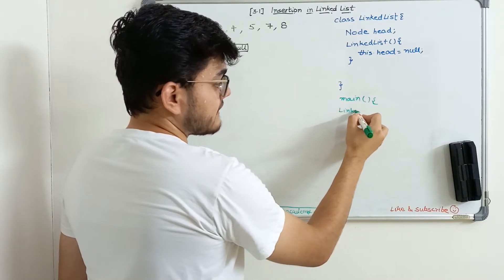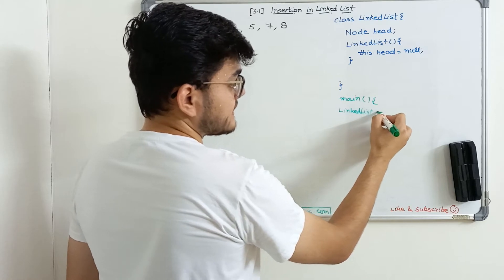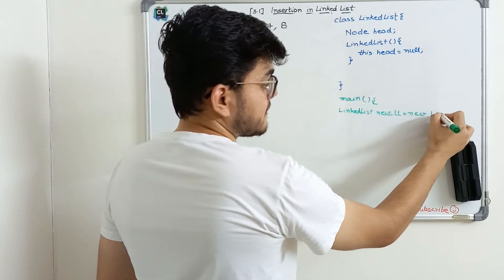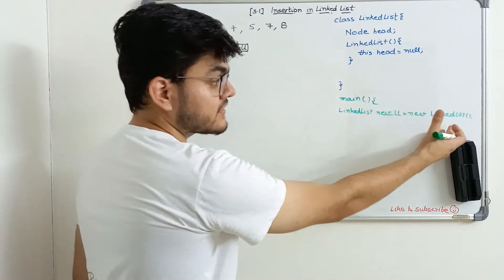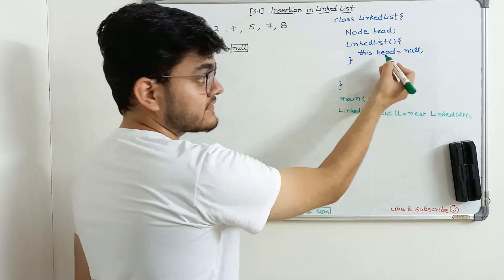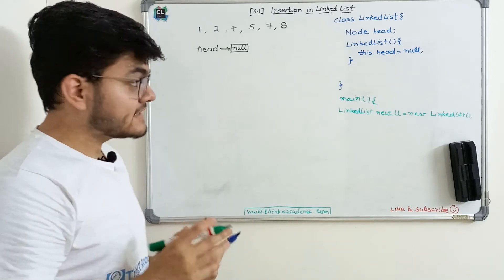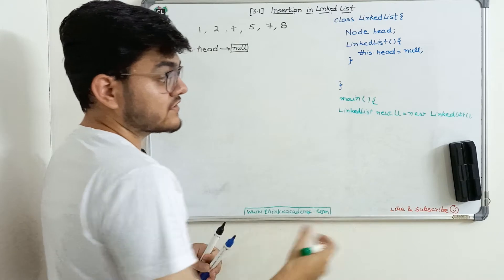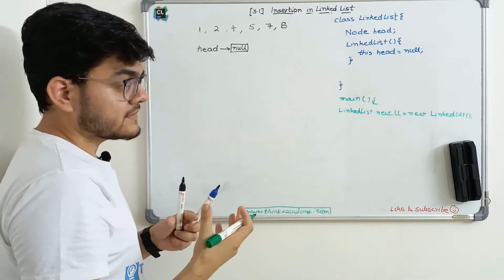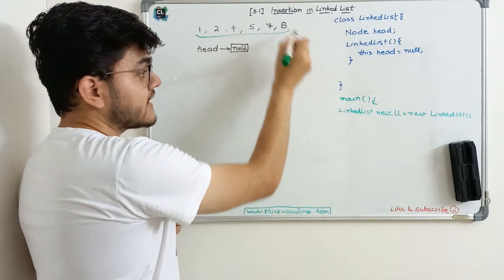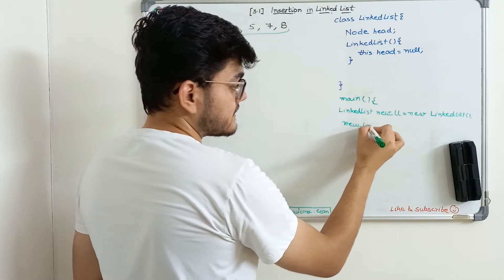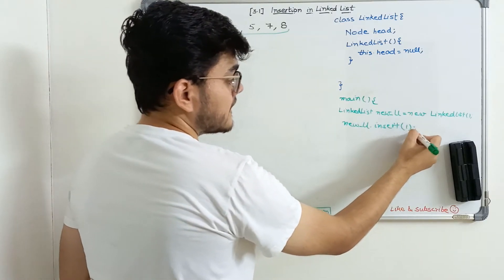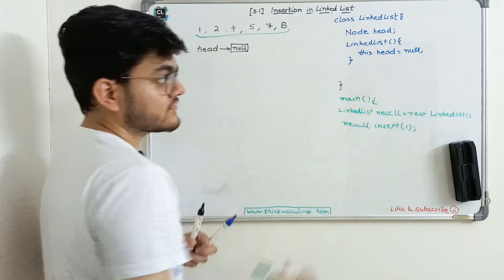Inside the main function, I will first create an object of this LinkedList class — a new LinkedList. Whenever you create an object of the class, its constructor will be called, and head will be assigned to null, giving us the initial instance of the linked list. Now we have to move to the next important step: how to insert nodes inside this linked list. I'm going to call the new linked list's insert function and supply the integer value one.